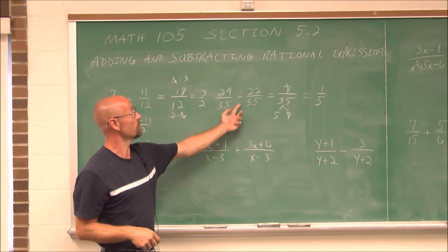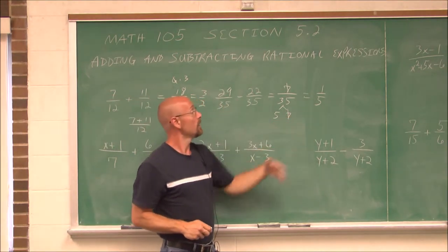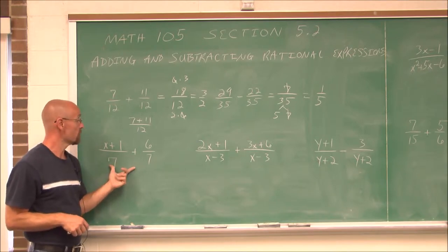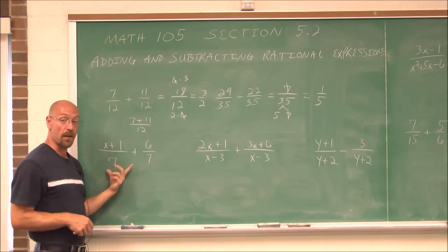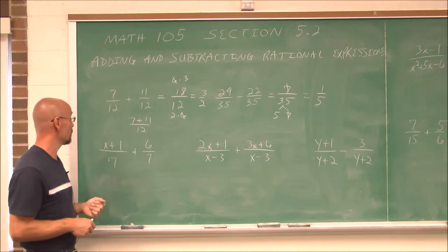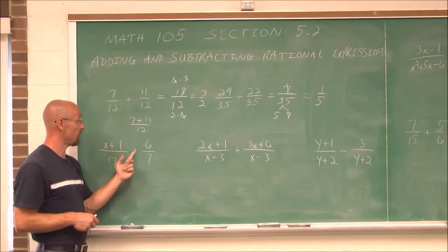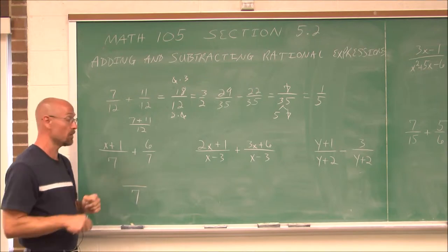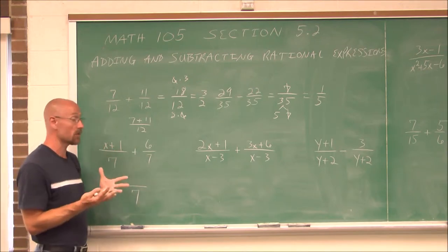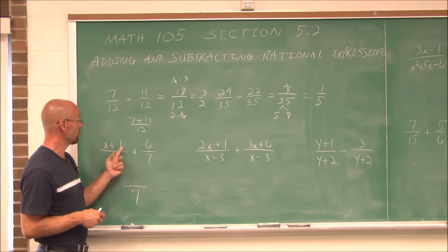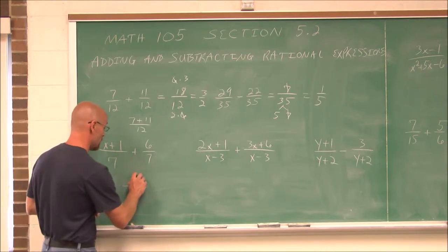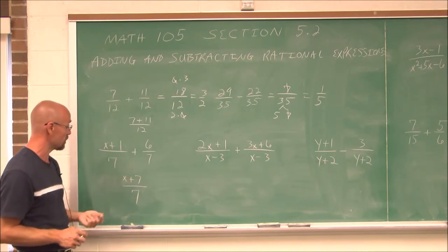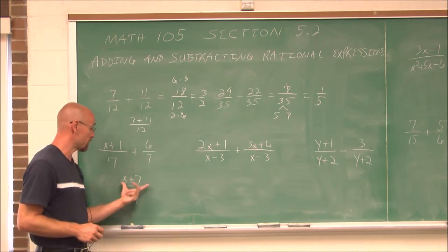Now we're going to do the exact same thing with rational expressions. If they have a common denominator, we can just combine like terms. We have x plus 1 plus 6, and both have the same denominator. 1 and 6 are just numbers — positive 1 plus 6 is 7 — so we get x plus 7 over 7.